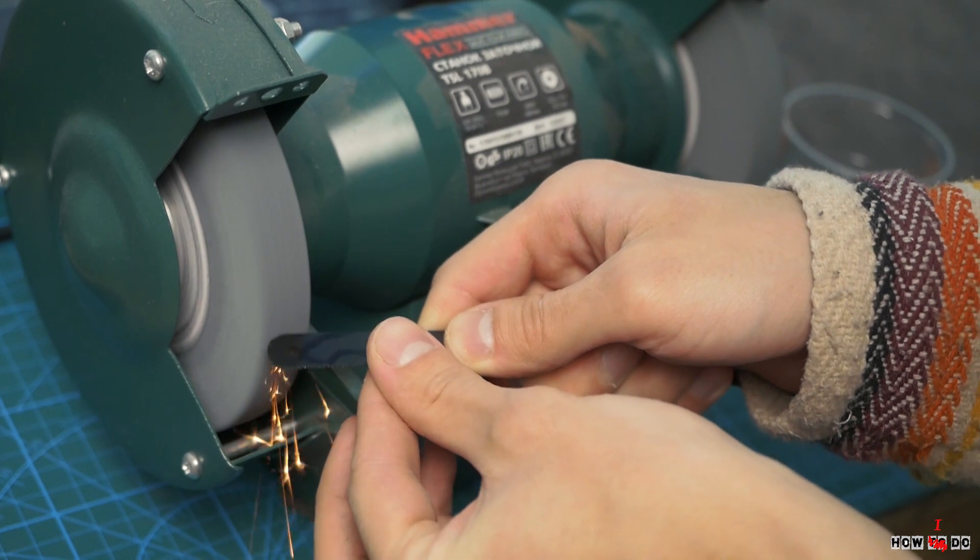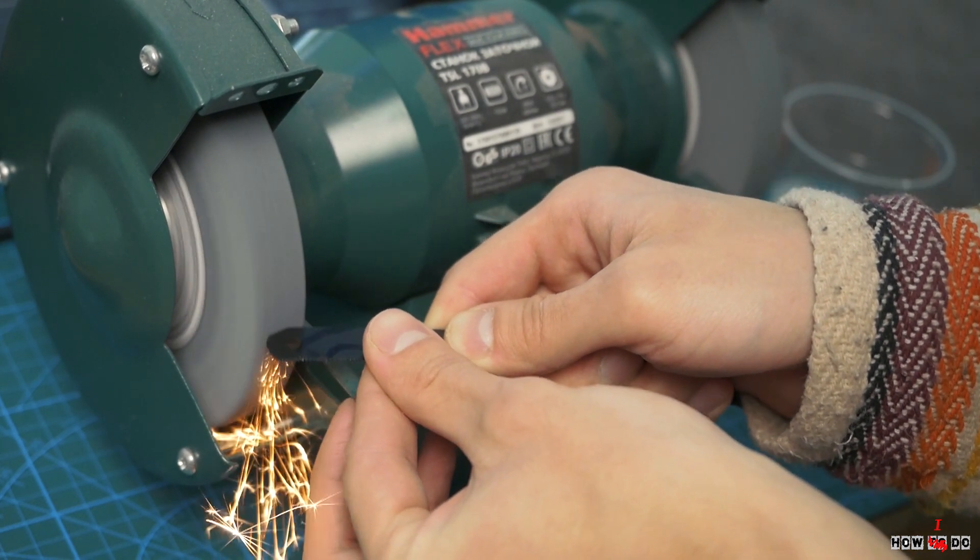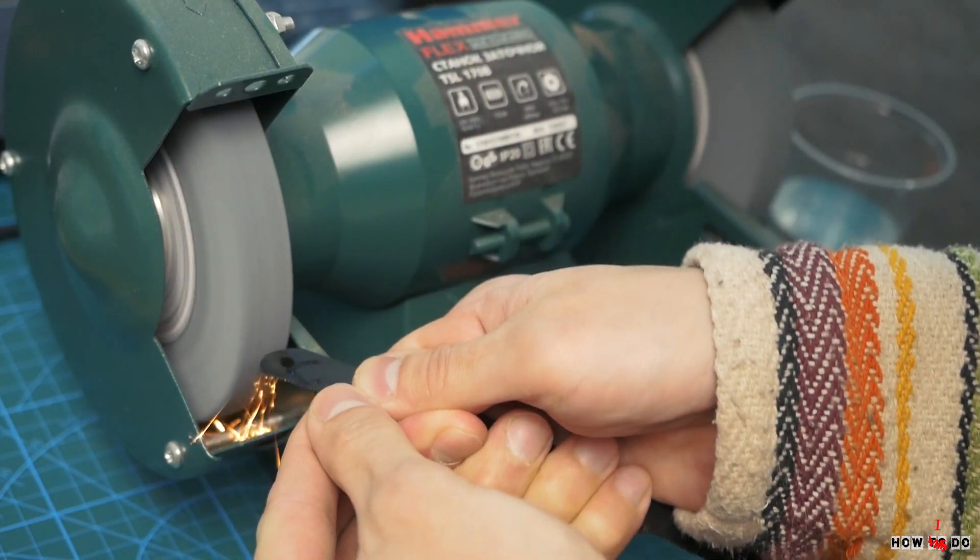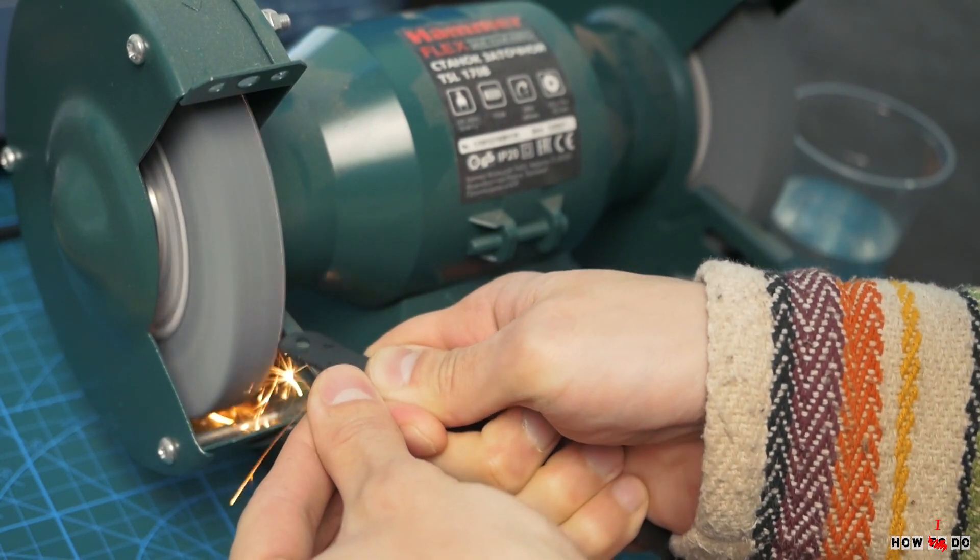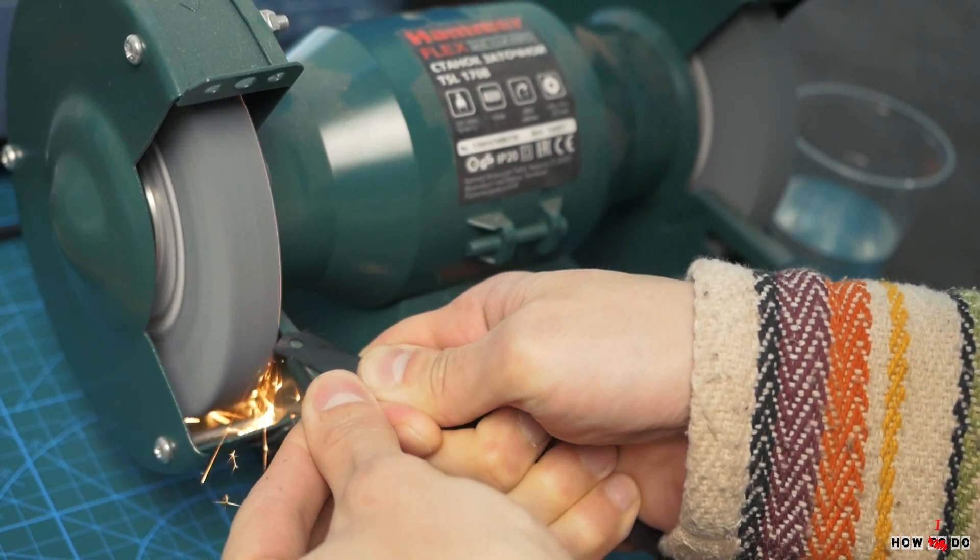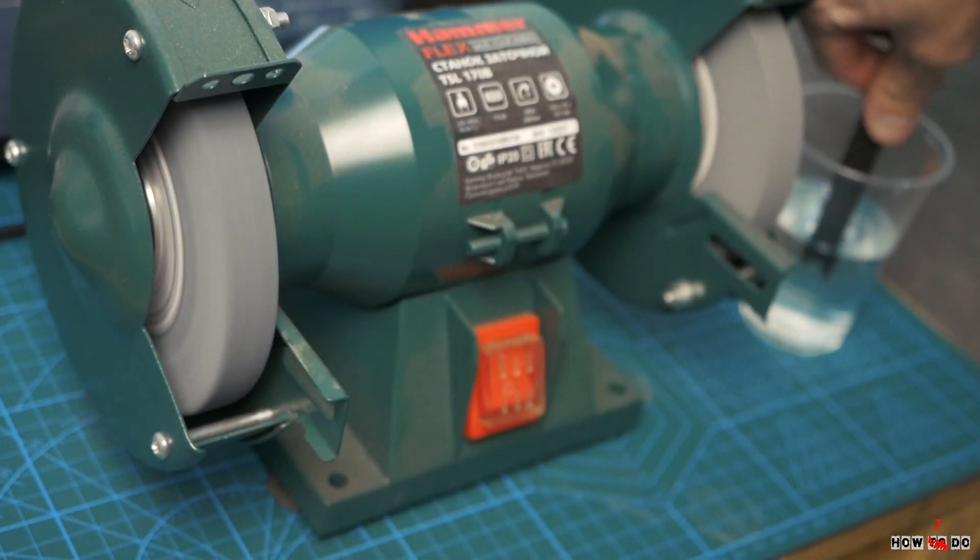Then I slowly grind the blade on a bench grinder. The main thing here is not overheat the steel, from which it will lose its properties. So I periodically dip the workpiece into the water.